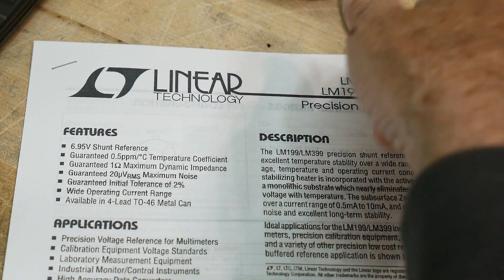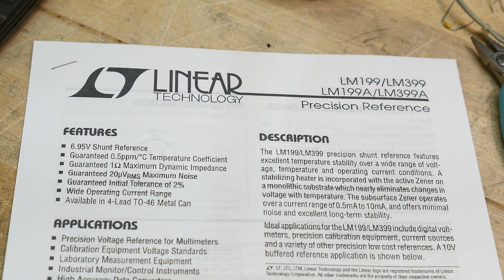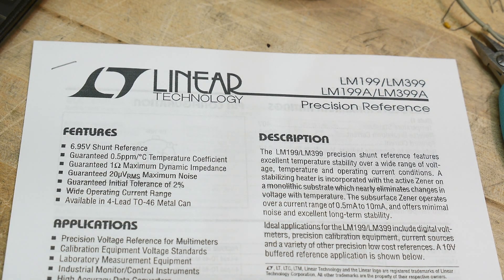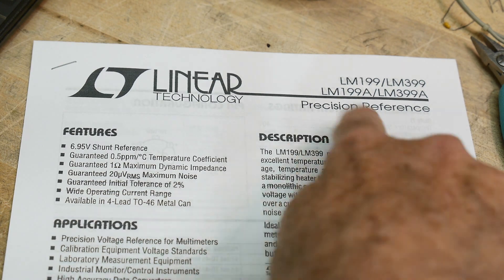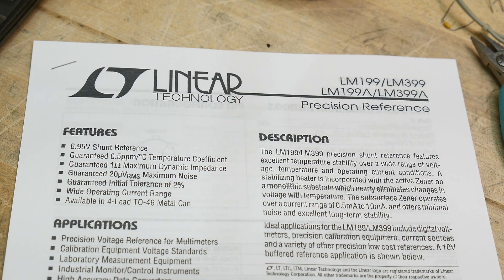The chip of the day is an LM399, a very famous chip. It's a very stable voltage reference, a precision reference used in everything. Almost every single five and a half or six and a half digit voltmeter is going to have one of these in it for its voltage reference.